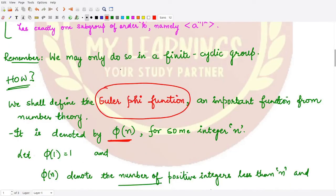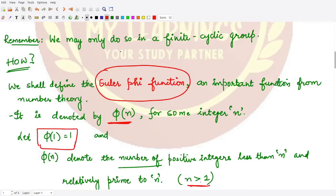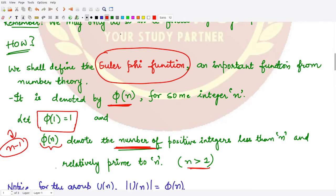The Euler phi function is defined such that phi(1) is exactly equal to 1. Whenever n is greater than 1, phi(n) tells us the number — and we are counting the number here, not the actual elements — of positive integers which are less than n and relatively prime to n. So among the n minus 1 numbers less than n, we select those which are relatively prime to n.